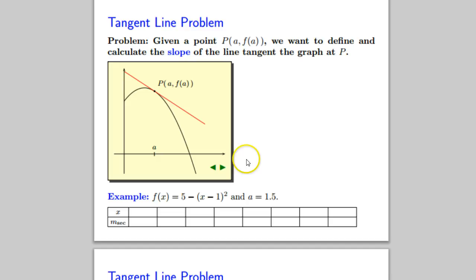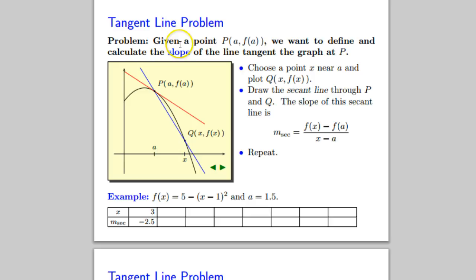So we just want that point. For example, here's our actual example: 5 minus (x minus 1) squared and A equals 1.5. Given that point, all this stuff, we choose a point x near A.